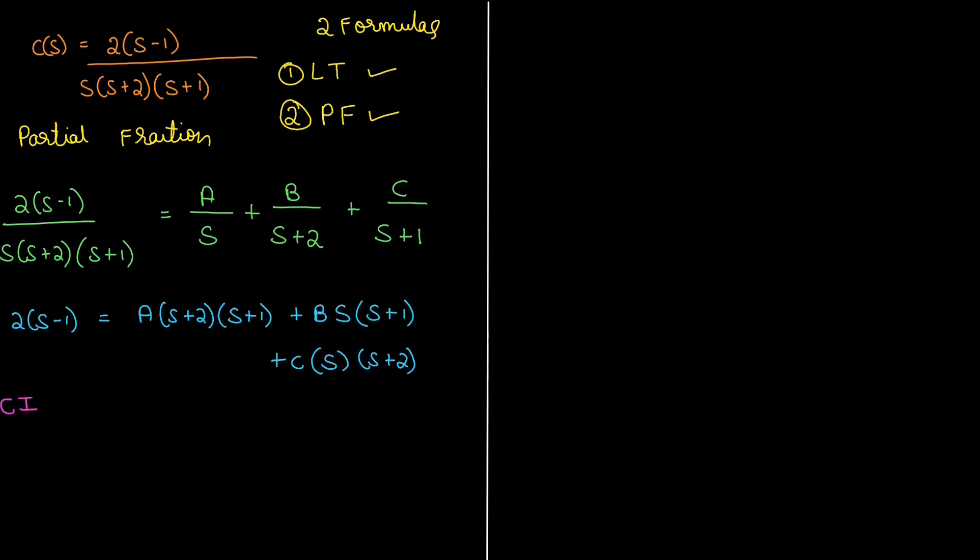Case 1: put s equals 0. We will have 2 into minus 1 which equals A. 2 into 1 will be 2, and since s is present in the other terms, we will put B and C as 0. In that case, A equals minus 1.